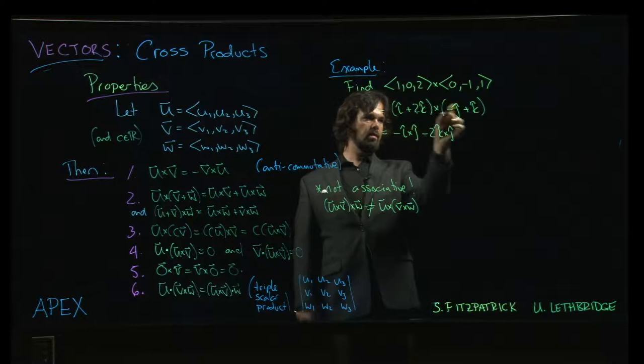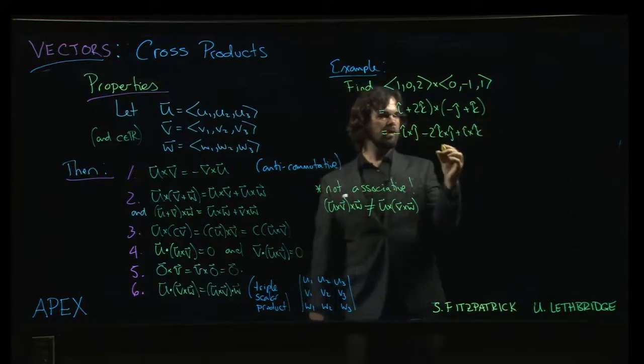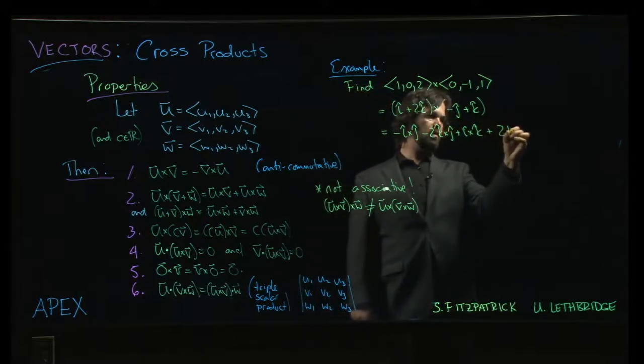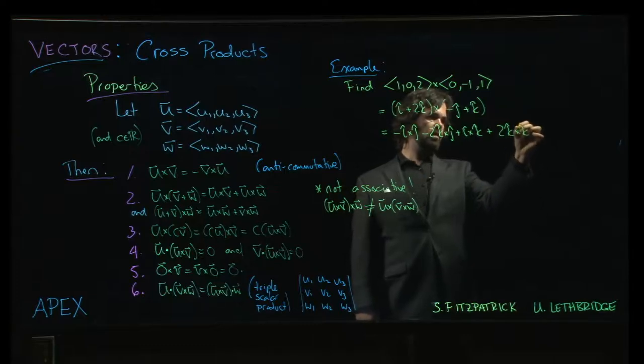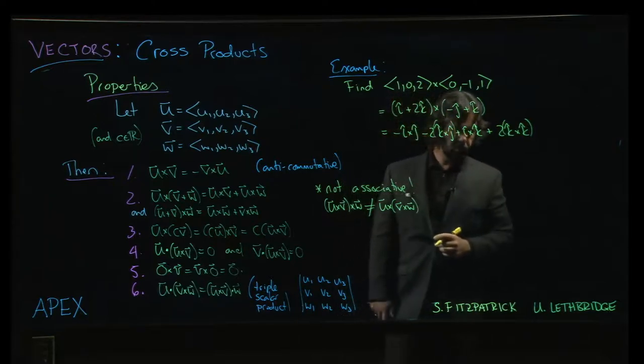And now we're going to do them with the k. So i cross k. And then we can do 2k crossed with k. And again, we can pull those scalars right out for the terms that have the scalars.